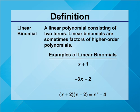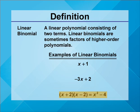Examples of linear binomials: x plus 1, negative 3x plus 2. In this third example you can see two linear binomials, x plus 2 and x minus 2. Their product is a quadratic binomial, x squared minus 4.